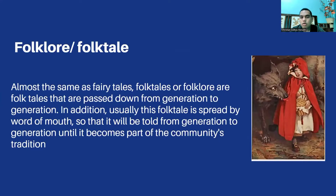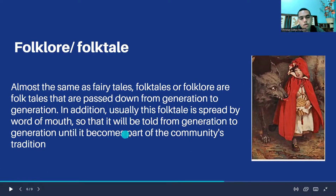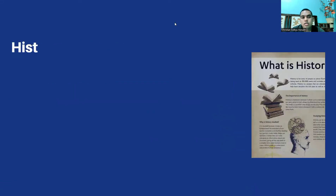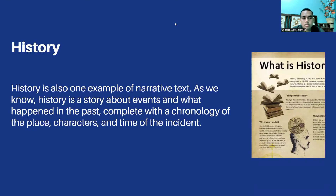Next is folklore or folktale. Almost the same as fairytales, folklore are stories passed down from generation to generation. Usually, this folklore is spread by word of mouth, told from generation to generation until it becomes part of the community's tradition. Next is history. History is also one example of narrative text — it is a story about events that happened in the past, complete with the chronology of place, characters, and time of the incident.